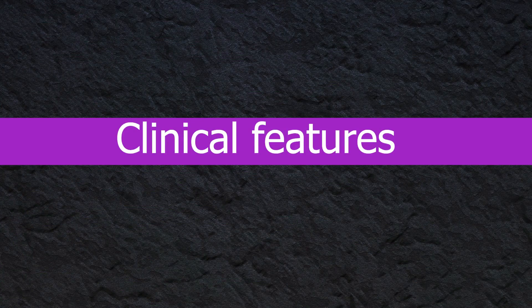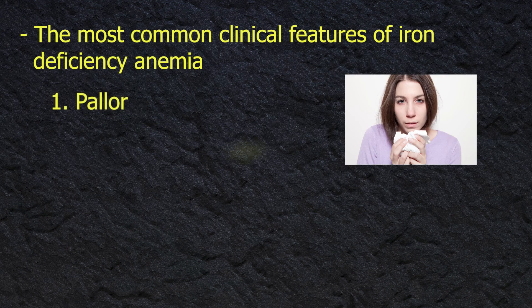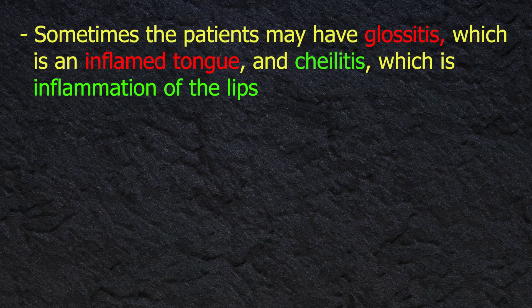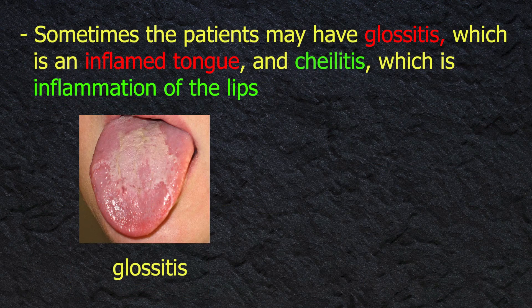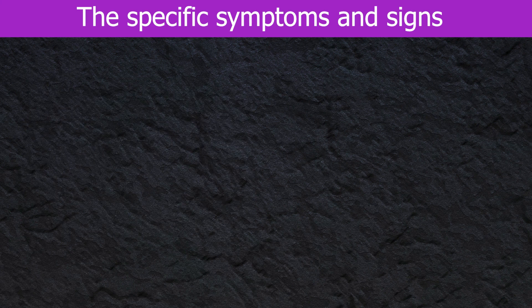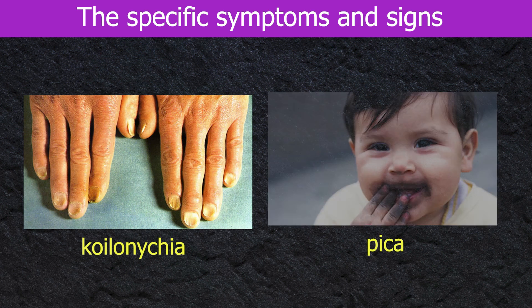The most common clinical features of iron deficiency anemia are pallor, fatigue, shortness of breath, and exercise intolerance. Sometimes patients may have glossitis, which is an inflamed tongue, and cheilitis, which is inflammation of the lips. Keep in mind that all these symptoms are weak and non-specific. The specific symptoms and signs include spoon-shaped nails known as koilonychia, craving for unusual substances like clay or ice which is called pica, and dysphagia.